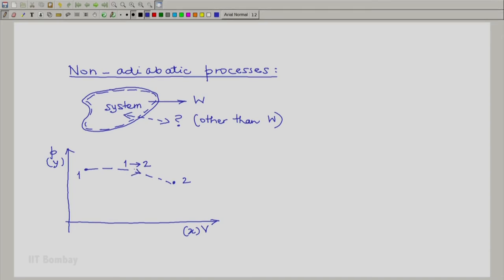It could be quasi-static, it need not be quasi-static. I don't qualify the process in any way except that it is for our given system and starts from this initial state 1 and ends at this final state 2.